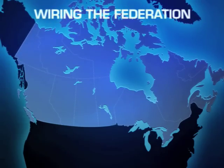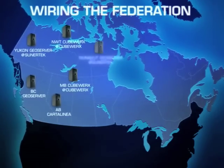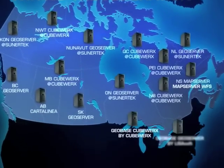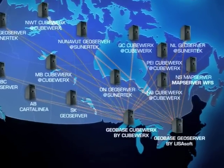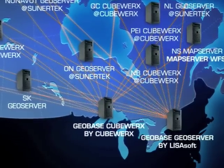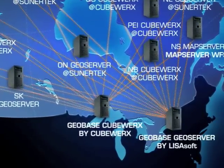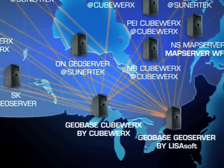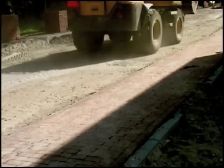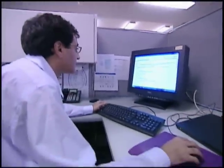This Open Geospatial Consortium project culminated in a nationwide demonstration of standards-based products that allow immediate access to current data. The project showed how municipal, provincial, and territorial authorities can now update data and automatically make their data available online in real time to those who need it anywhere across Canada. Maps are most important at the local level, and changes to local map features are made by local, provincial, or territorial officials.